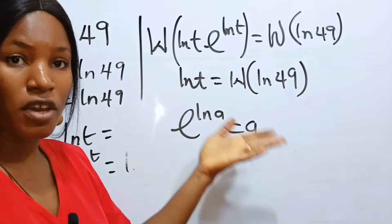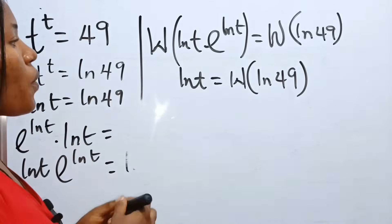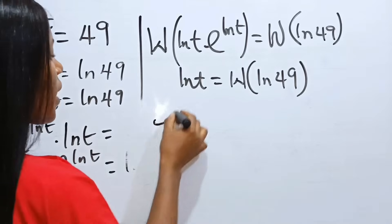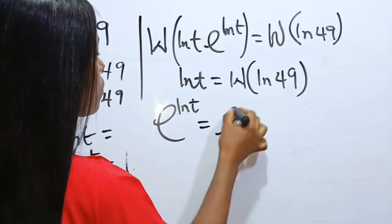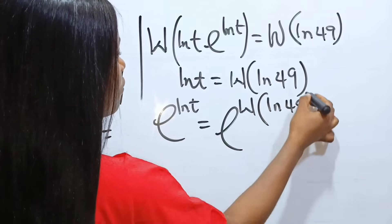So, e to the power of ln t will give us t. And that is what we are looking for. So, let's do that. We introduce e, base e, to both sides of the equation. So, we have e to the power of ln t is equal to e to the power of the Lambert W function of ln 49.